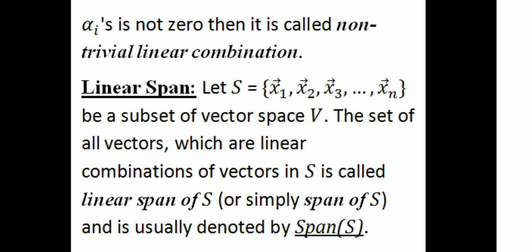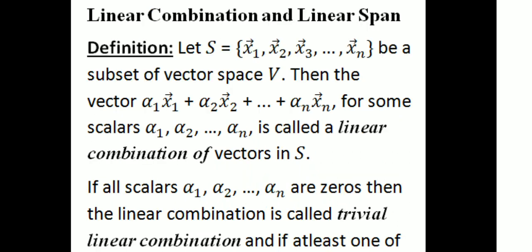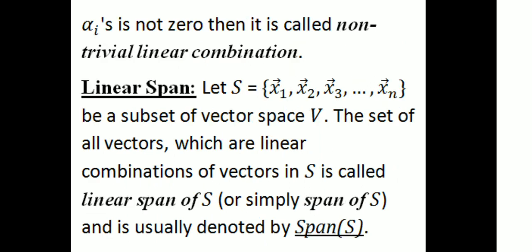In other words, let S = {x₁, x₂, ..., xₙ} be a subset of a vector space V. Then the set of all vectors which are linear combinations of vectors in S is called the linear span of S, or simply the span of S, and is usually denoted by span(S).